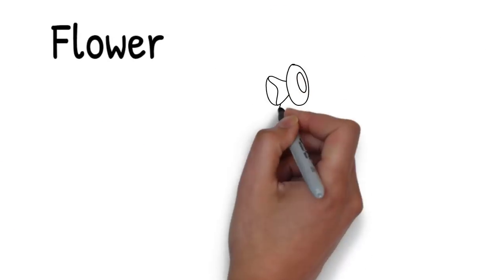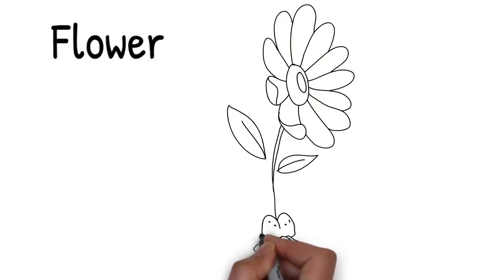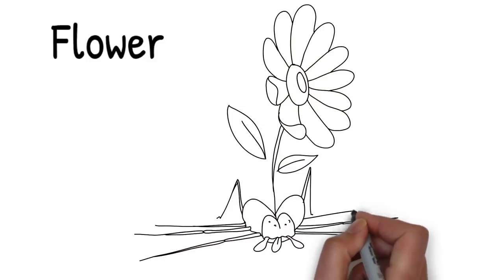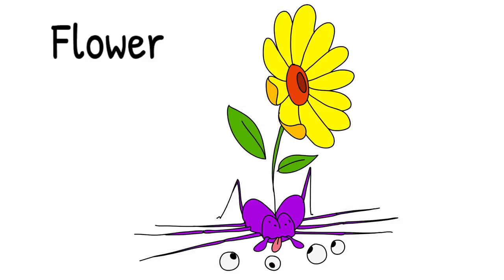From the purple corpse of the flattened spider begins to grow a large flower. Maybe it's a reincarnation of the spider and it grows up towards the sky looking happy and pleased.